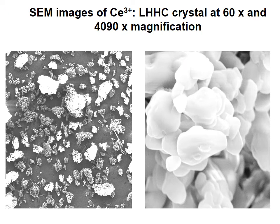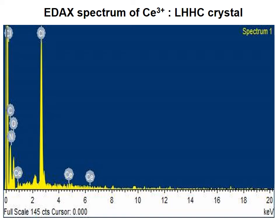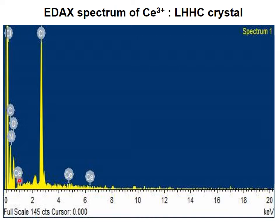Surface morphology of CE3+ ion-doped single crystal: At 60× magnification along the 100 plane, crystals of different sizes are observed with disturbed uniformity. At 4090× magnification, a disc-like shape — leaflets in tight circular aggregations — is observed. Using EDAX spectrum, the chemical composition of the grown crystal was determined; the percentage of cerium is clearly seen. The presence of C, N, O, and Ce intense peaks indicates formation of CE3+ ion settled in the LHHC single crystal, confirming incorporation of CE3+ ion in the crystal lattice.